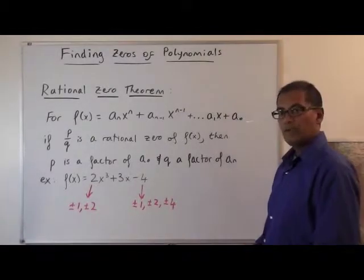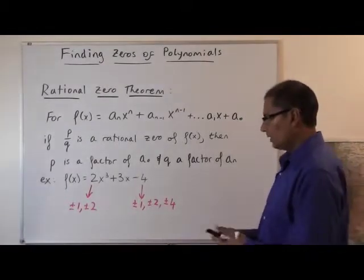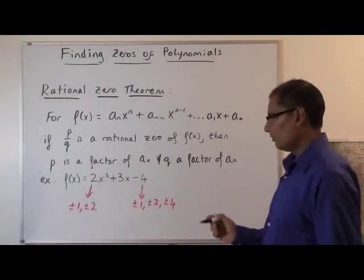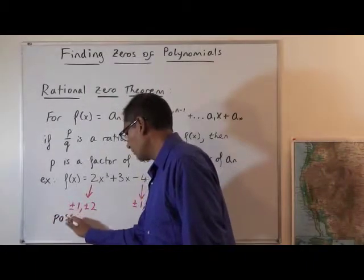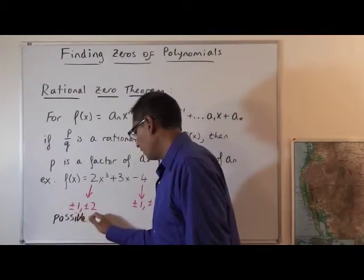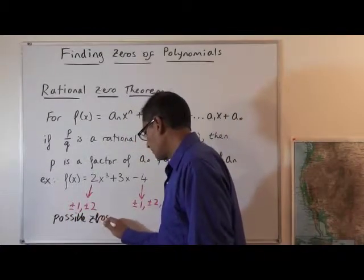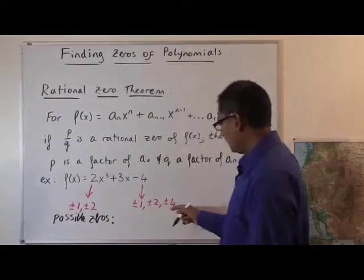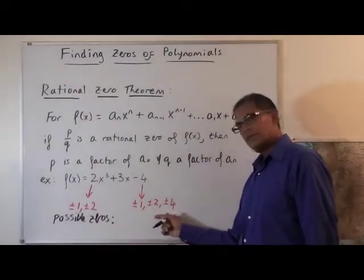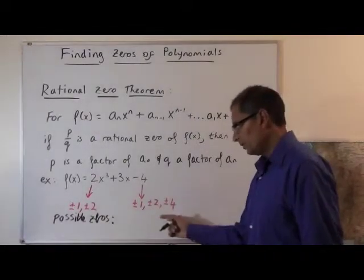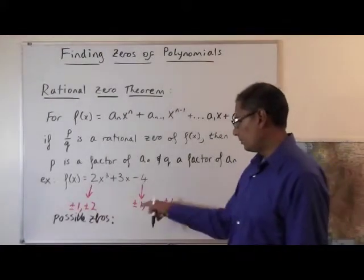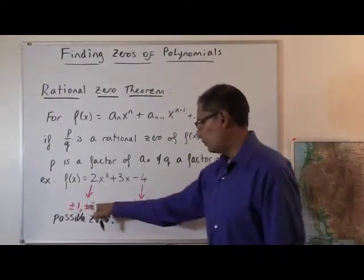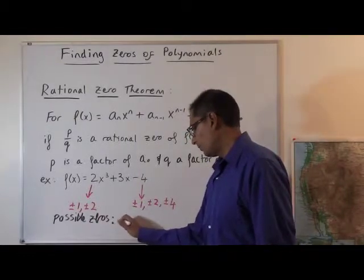And so according to the rational zero theorem, we can list out these possible zeros of this function, so possible zeros of f(x) are the ratio of the factors of this term to the factors of this term. So in other words, let's start with 1. Plus or minus 1 over 1 is going to give me plus or minus 1.